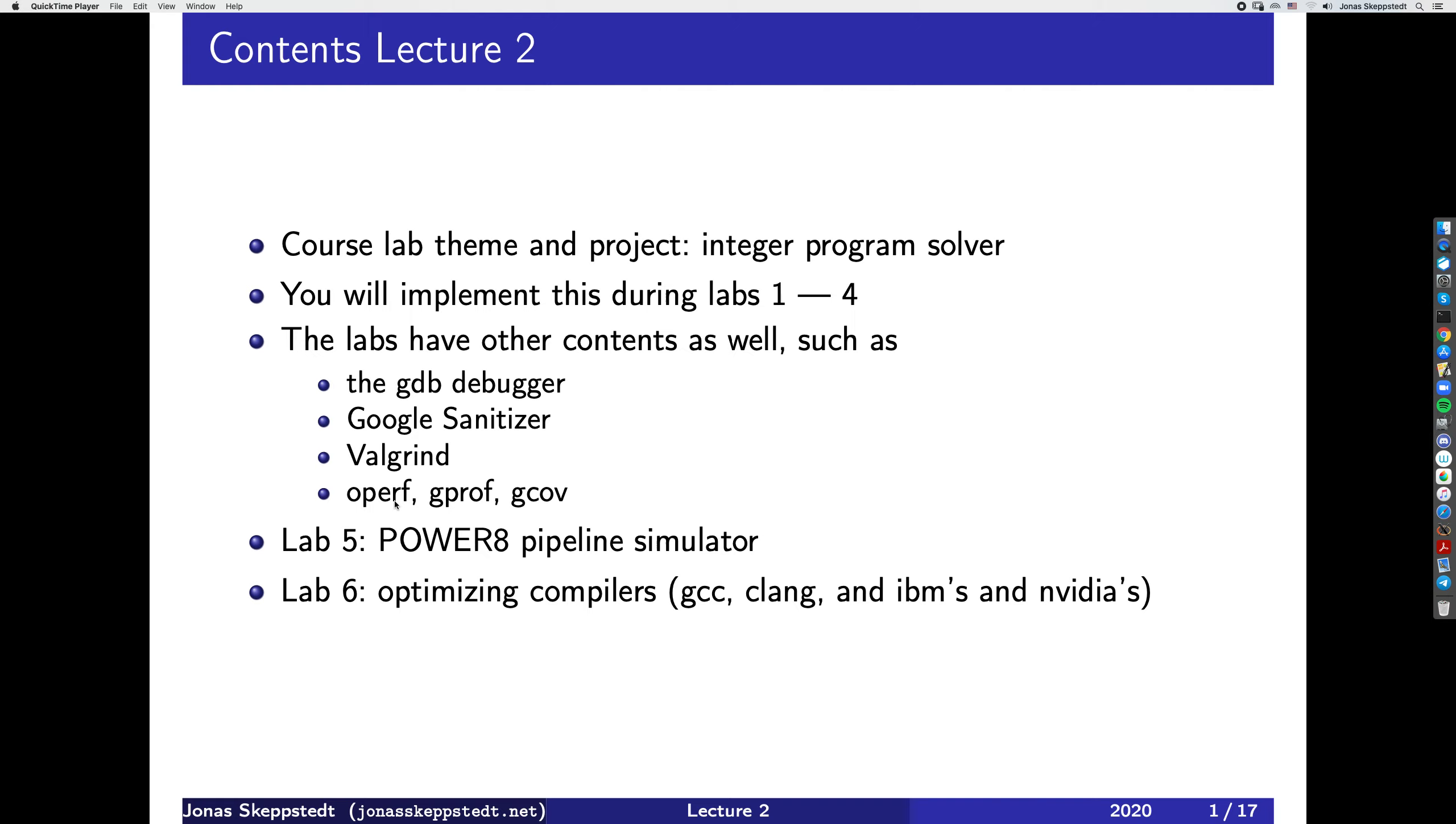Lab five and six have no new programming tasks planned, but you may need to use them as a reserve for labs one to four. You will use the IBM pipeline simulator on your program to measure what takes time at the clock cycle level, and there are usually some surprises.